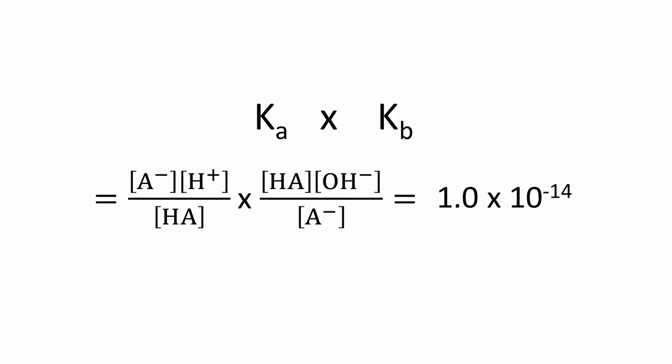The dissociation constants of a weak acid and its conjugate base share a special relationship. We see that their product gives the equilibrium constant for the auto-ionization of water. So, at 25 degrees Celsius, the product of Ka and Kb will yield 1.0 times 10 to the negative 14.